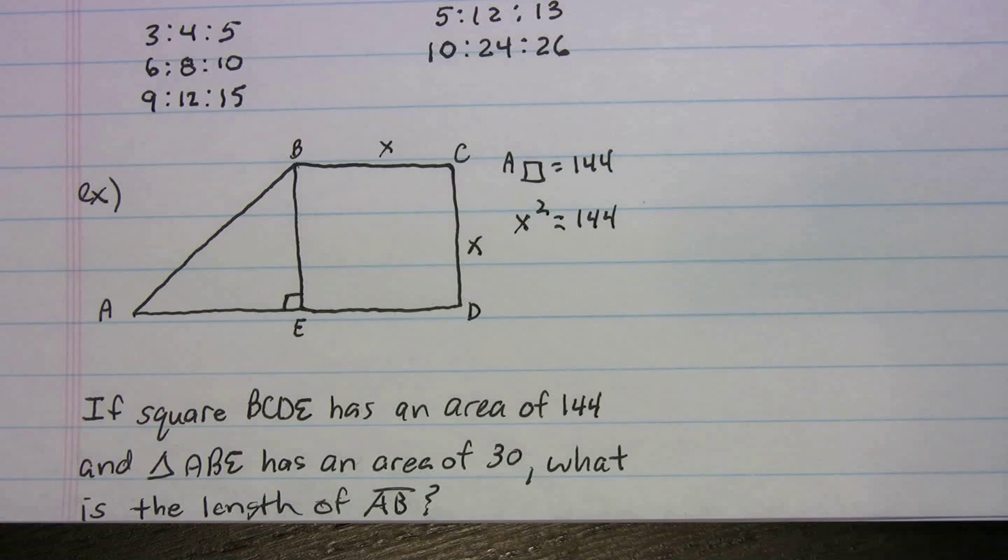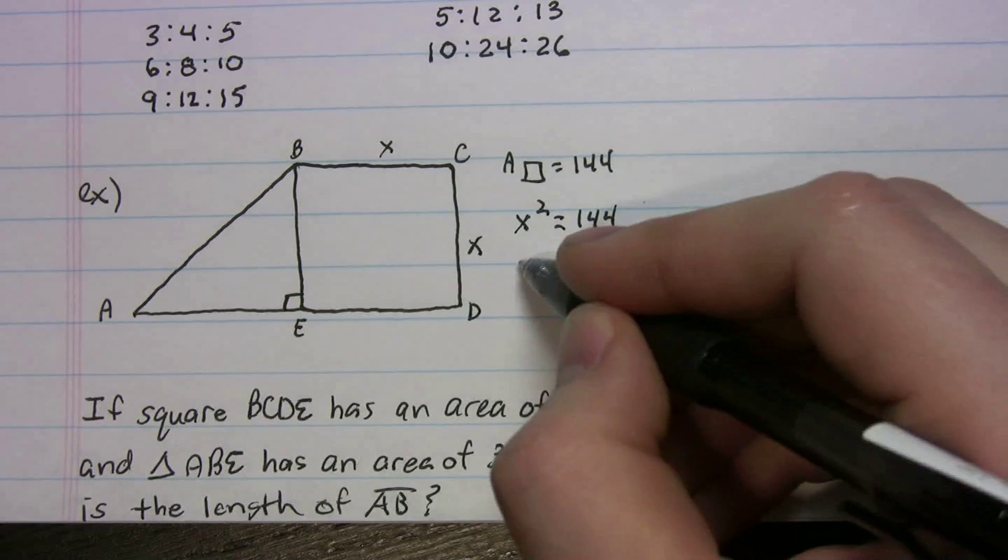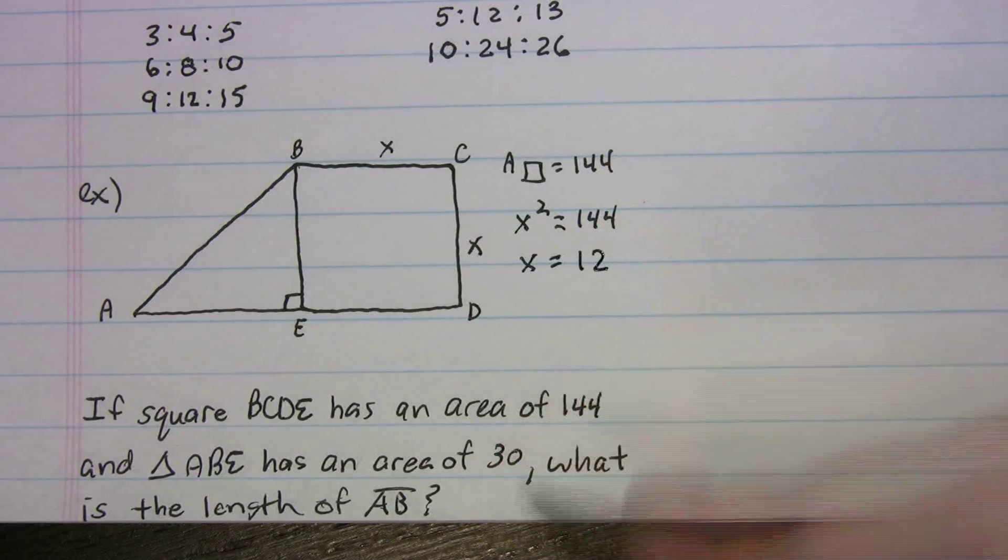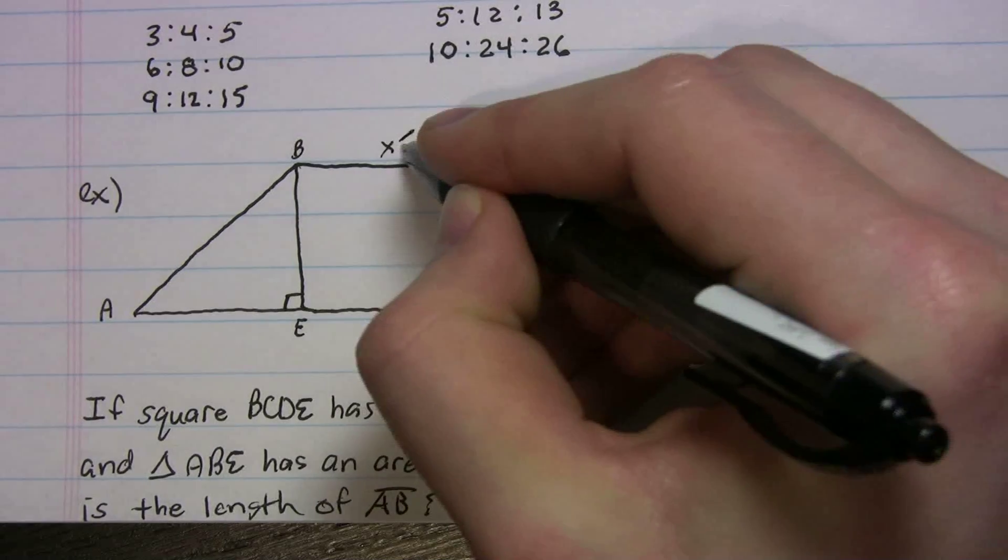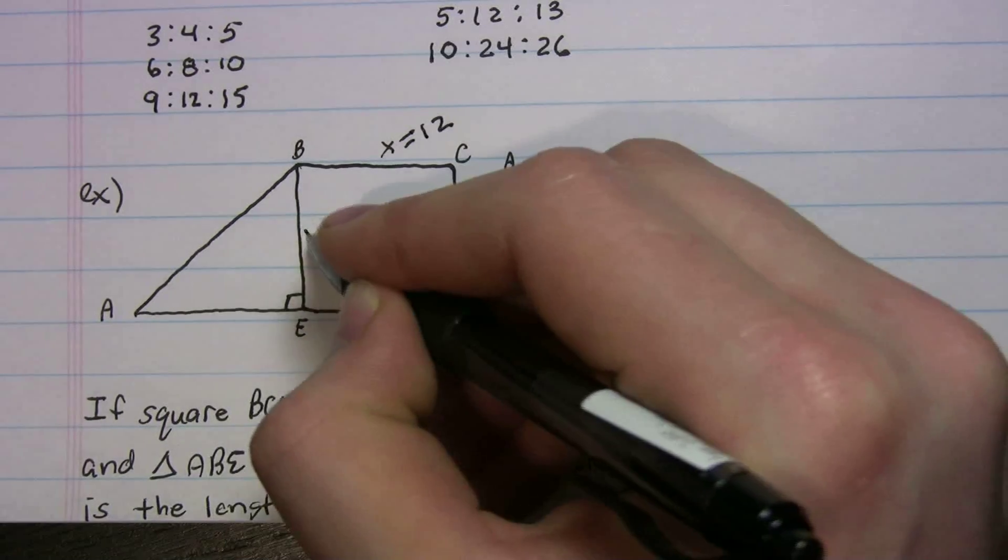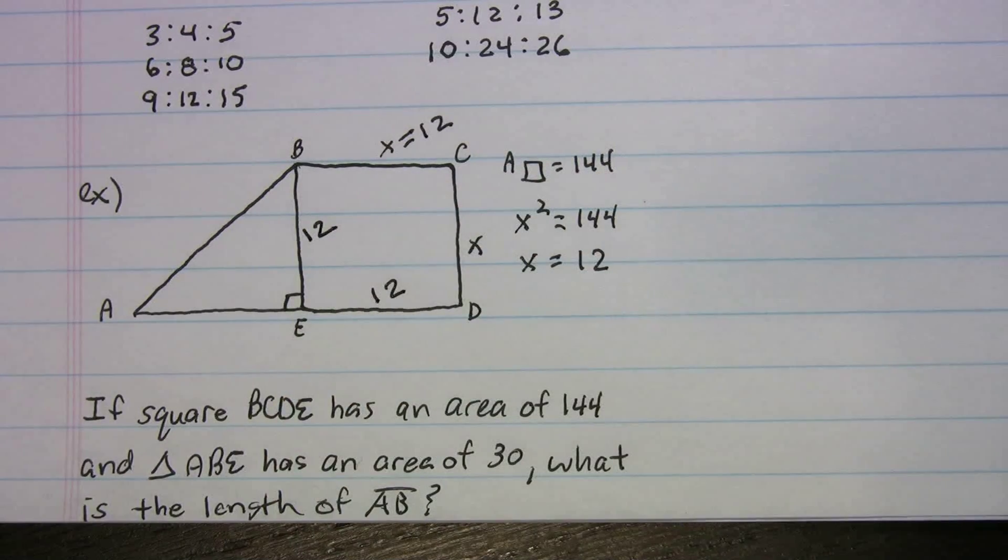A side times a side gives us 144. So what does that side have to be? You can use a calculator, but you might know that 12 times 12 gives you 144. So x equals 12. So that means each of these sides is 12. And I'll write that in. Okay. So now we've found that each of these sides is 12.